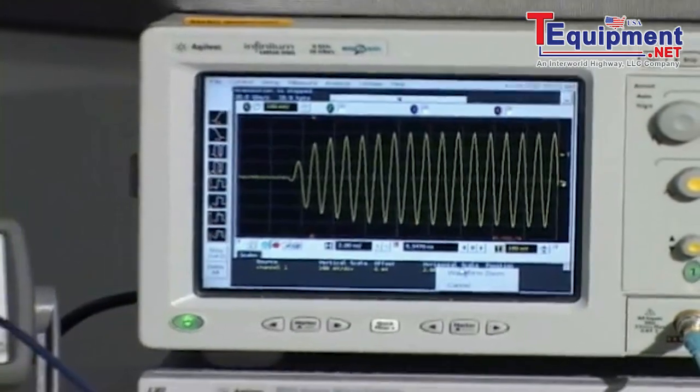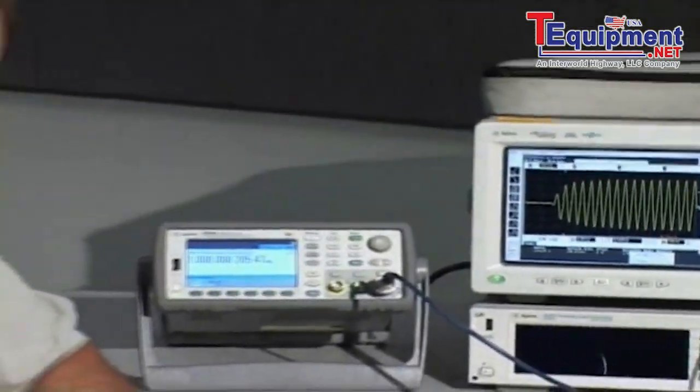Now, on the counter, what we can measure on this type of signal is the pulse width, the pulse repetition rate, the pulse repetition interval, and finally the burst frequency or the carrier frequency.